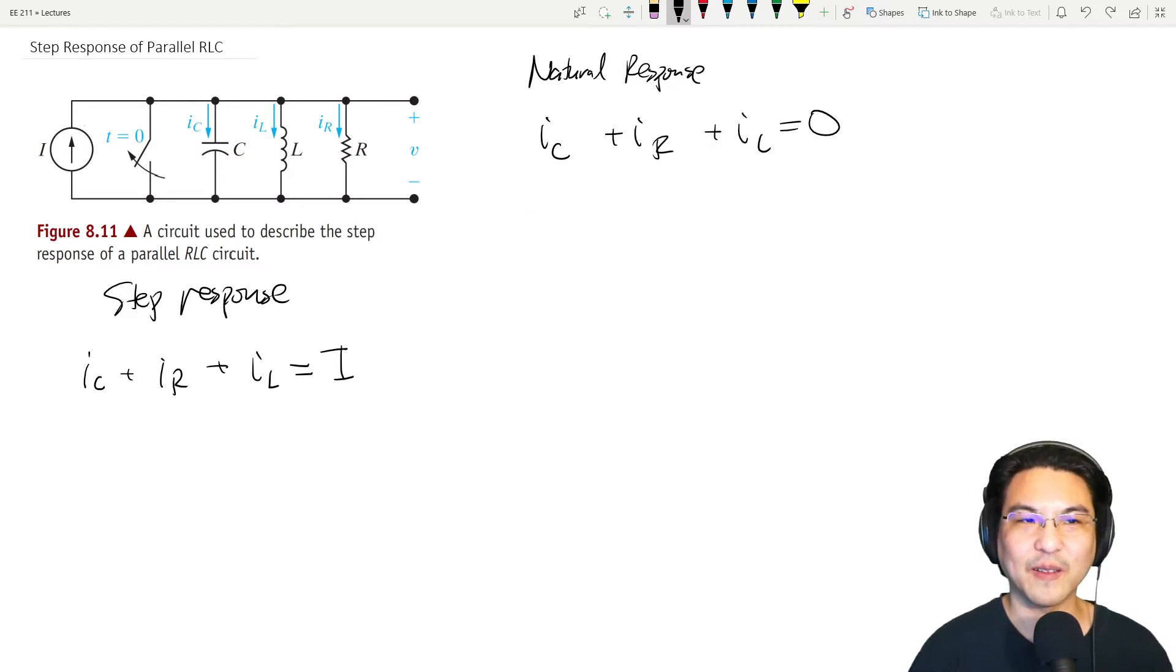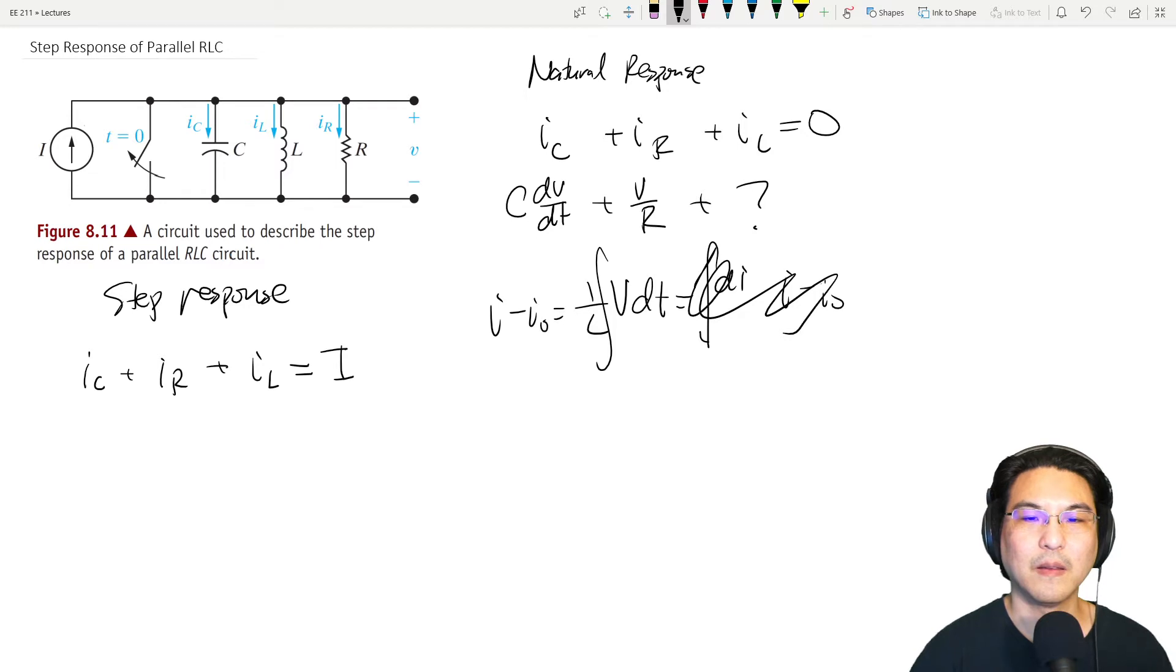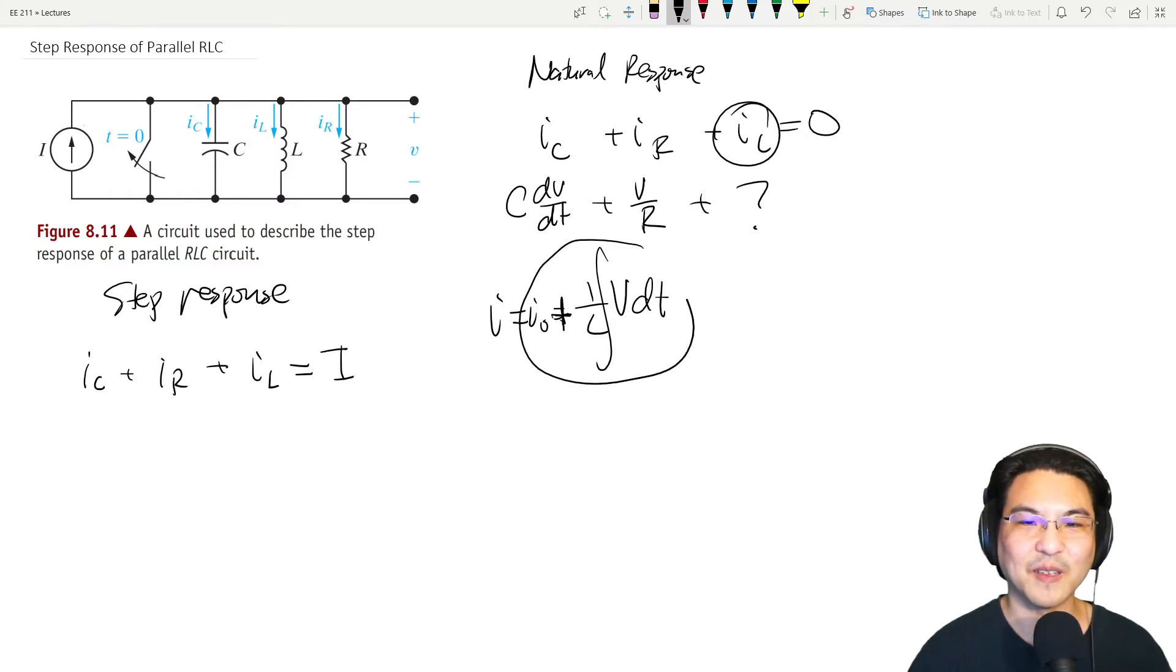But now how do we solve? For the current for the capacitor looks like C dV/dt. For a resistor, V over R. For an inductor, I know that the voltage for an inductor looks like this. So if we want the current, we can divide both sides by L, and then move dt over here like this, and then integrate. So this turns into I minus I_0. And then move the initial current on this side of the equation. So then it looks like this.